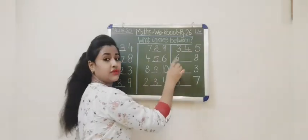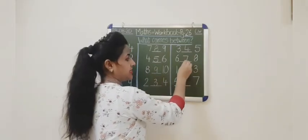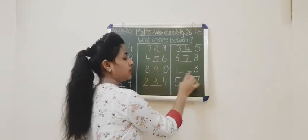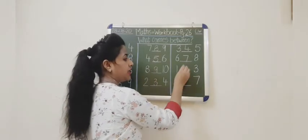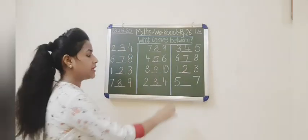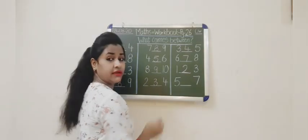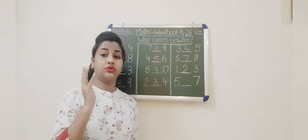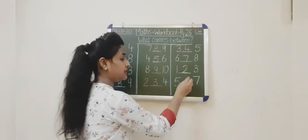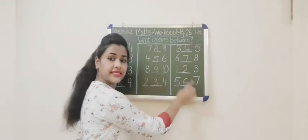Now which number is this? 6. What comes after 6? 6, 7, 8. Now what comes after 1 and in between 1 and 3? Count: 1, 2, 3. Now which number is this? 5. What comes after 5 and in between 5 and 7? Count: 1, 2, 3, 4, 5 and 6. So we will write the number 6 over here, and 7. So: 5, 6, 7.